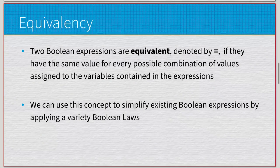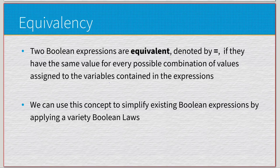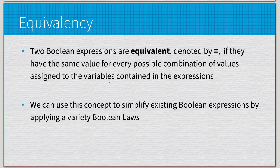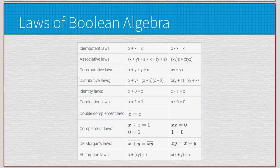These examples illustrate Boolean laws based on propositional laws. Before we can assert Boolean laws, the idea of Boolean equivalency has to exist. Two Boolean expressions are said to be equivalent — denoted by an equal sign — if they have the same value for every possible combination of values assigned to the variables. If two expressions yield the same results for all inputs, they're equivalent and interchangeable, which lets us simplify complex Boolean expressions.